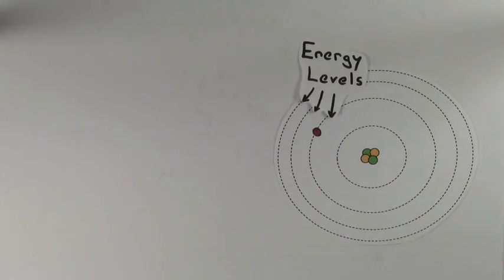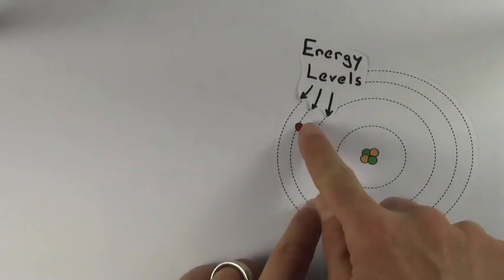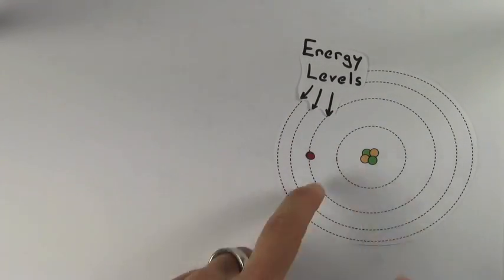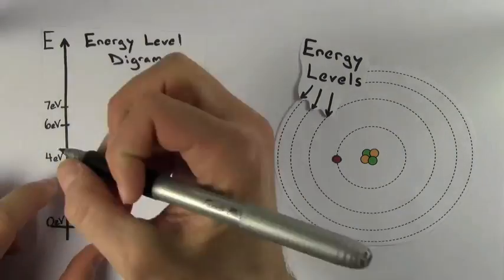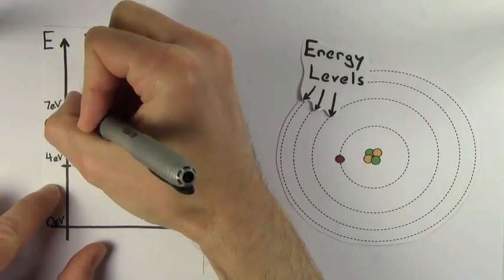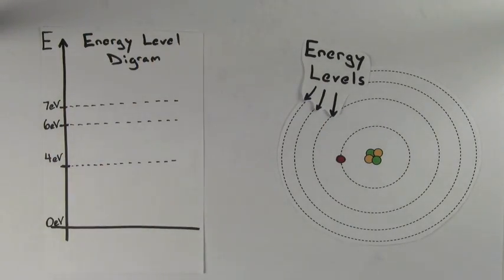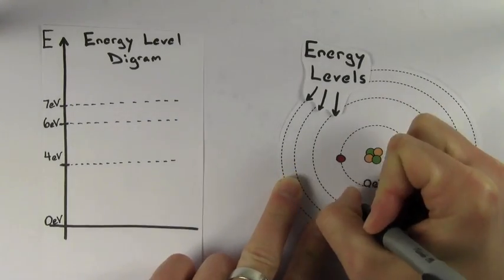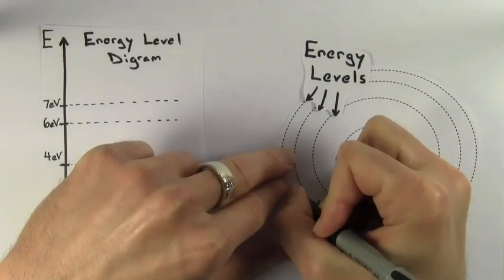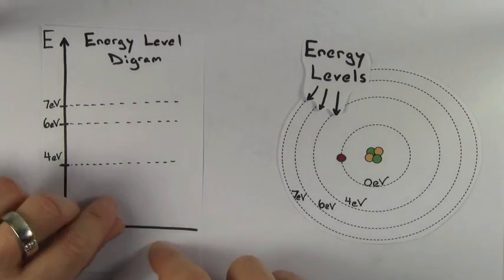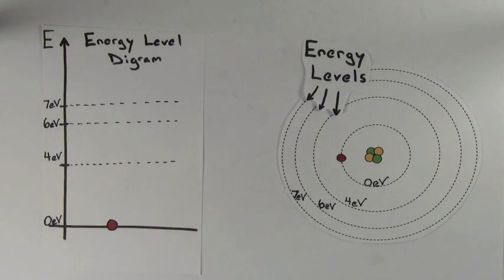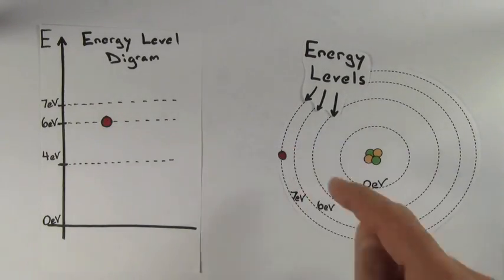These dashed lines represent the different energy levels the electron can have while in the atom. We like representing these energy levels with an energy level diagram. The energy level diagram gives us a way to show what energy the electron has without having to draw an atom with a bunch of circles all the time. Let's say our pretend atom has electron energy levels of 0 eV, 4 eV, 6 eV, and 7 eV.